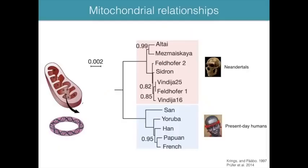The very first DNA sequenced from a Neanderthal was done in the late 1990s by Matthias Krings and Svante Pääbo, providing just a few hundred bases of the mitochondrial genome. It showed that mitochondrially, Neanderthals are a distinct clade from modern humans. Subsequent sequencing of several Neanderthals confirmed this picture. From mitochondrial data, complete replacement of Neanderthals by modern humans — with no mixture — seemed the most likely scenario.